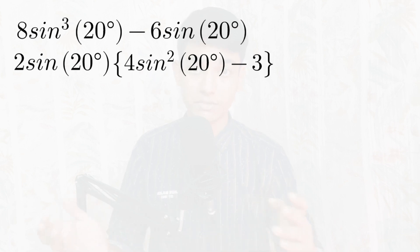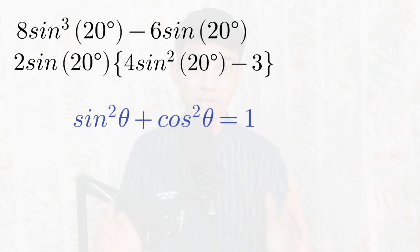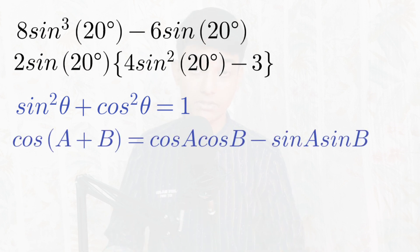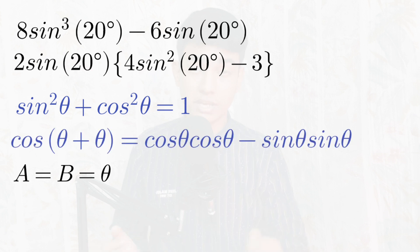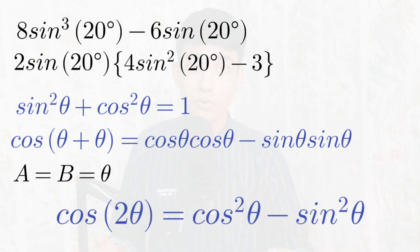Outside the bracket we have 2 sin(20°), which is simple. Inside we have sin²(20°), which we'll break down using a trigonometric identity. Recall the universal identity sin²θ + cos²θ = 1. Also recall the identity cos(a+b) = cos(a)cos(b) − sin(a)sin(b). If we set a = b = θ, the left side becomes cos(2θ), and the right side becomes cos²θ − sin²θ.